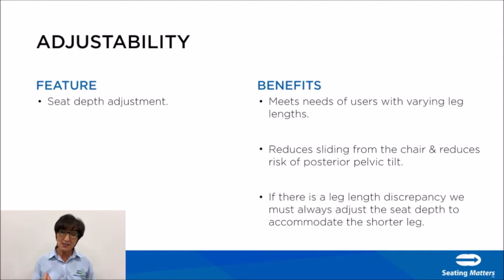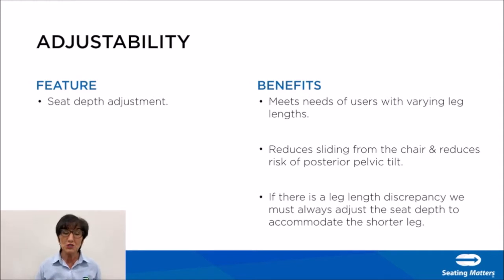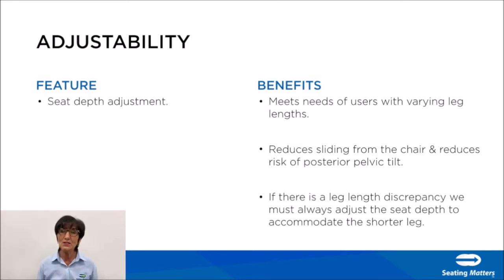The next adjustment is seat depth. This meets the needs of varying clients with different leg lengths. Proper adjustment reduces sliding from the chair and reduces the risk of posterior tilt. If there is a leg length discrepancy, we always adjust the seat depth to accommodate the shorter leg.